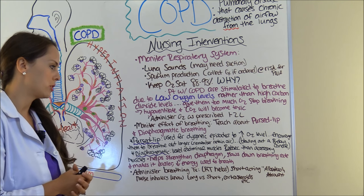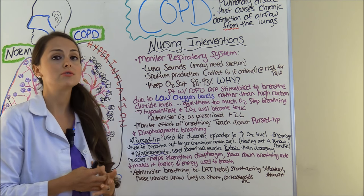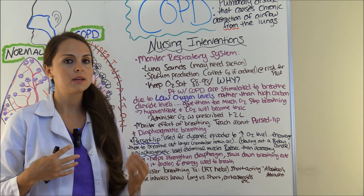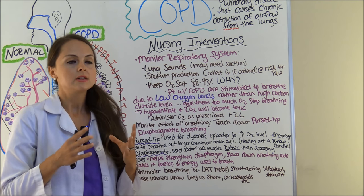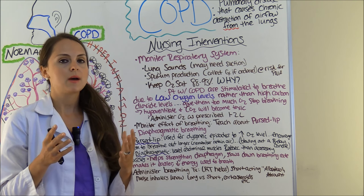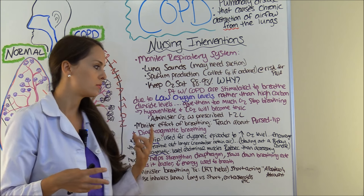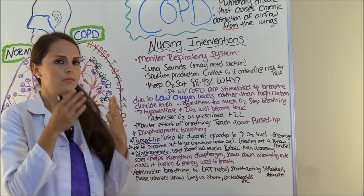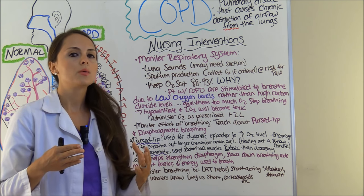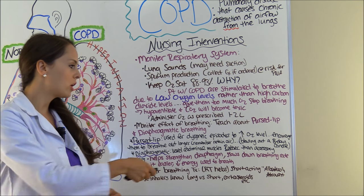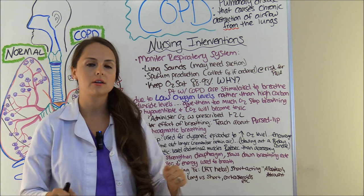Let's talk about pursed lip breathing first. This is great to use whenever your patient is having those dyspneic episodes. It works even better than putting the oxygen on them because it increases the oxygen level and encourages them to breathe out longer. These patients are retaining a lot of air volume due to what's going on with their alveolar sacs and the bronchioles. What they will do is breathe in and then blow out through pursed lips, like they're trying to blow out a birthday candle. This encourages them to breathe out longer, force that air out, slow down the breathing, and increase that oxygen level.